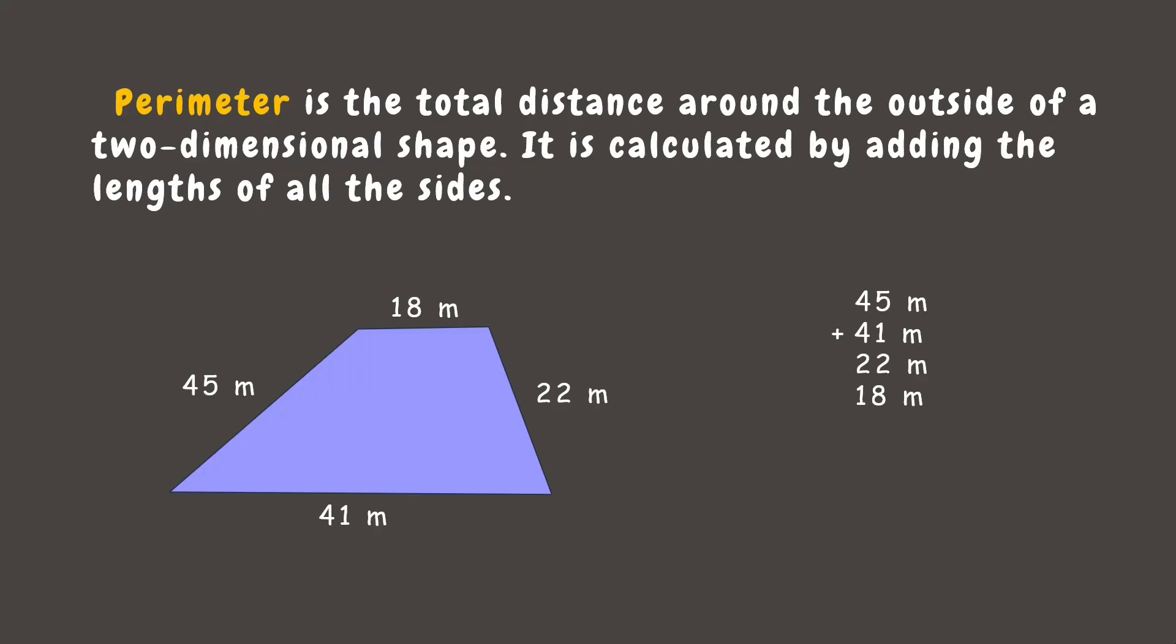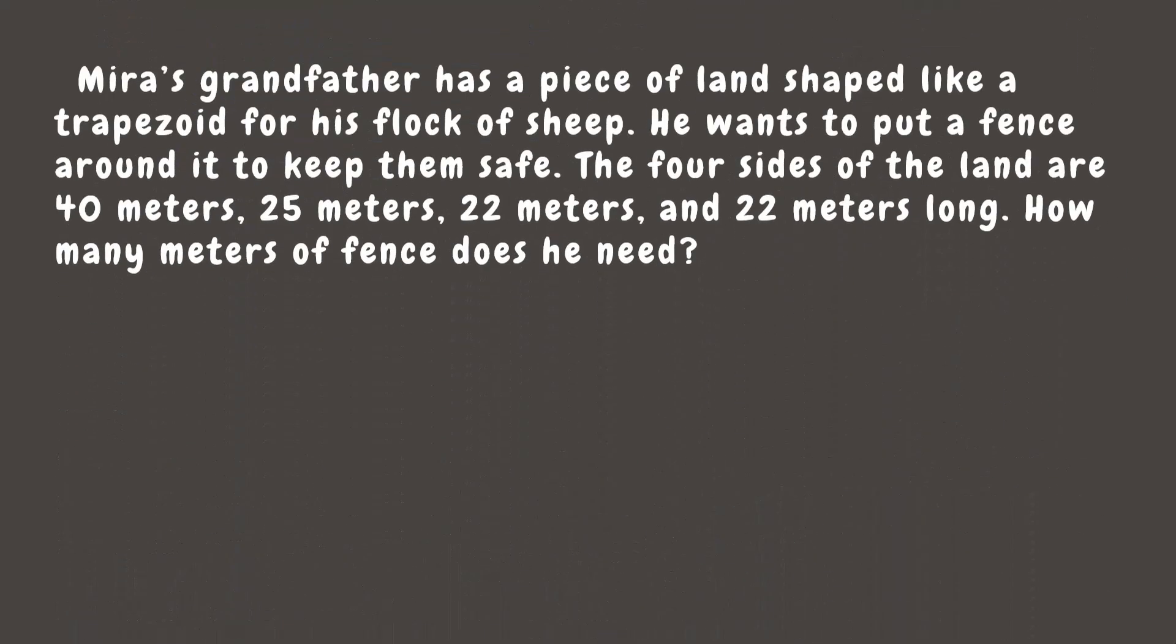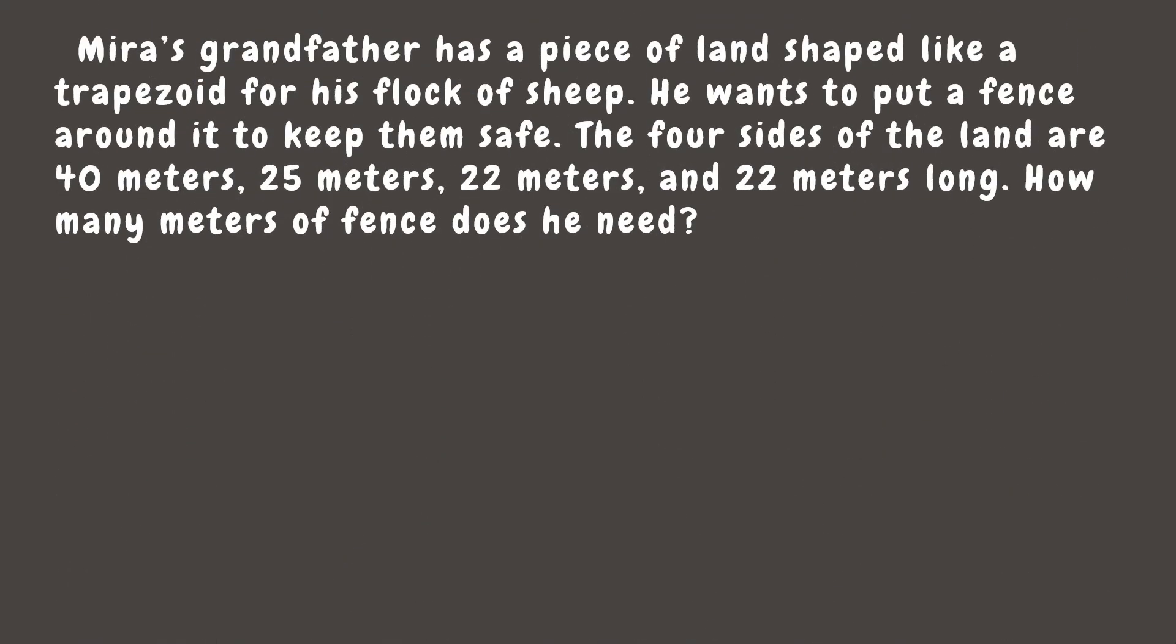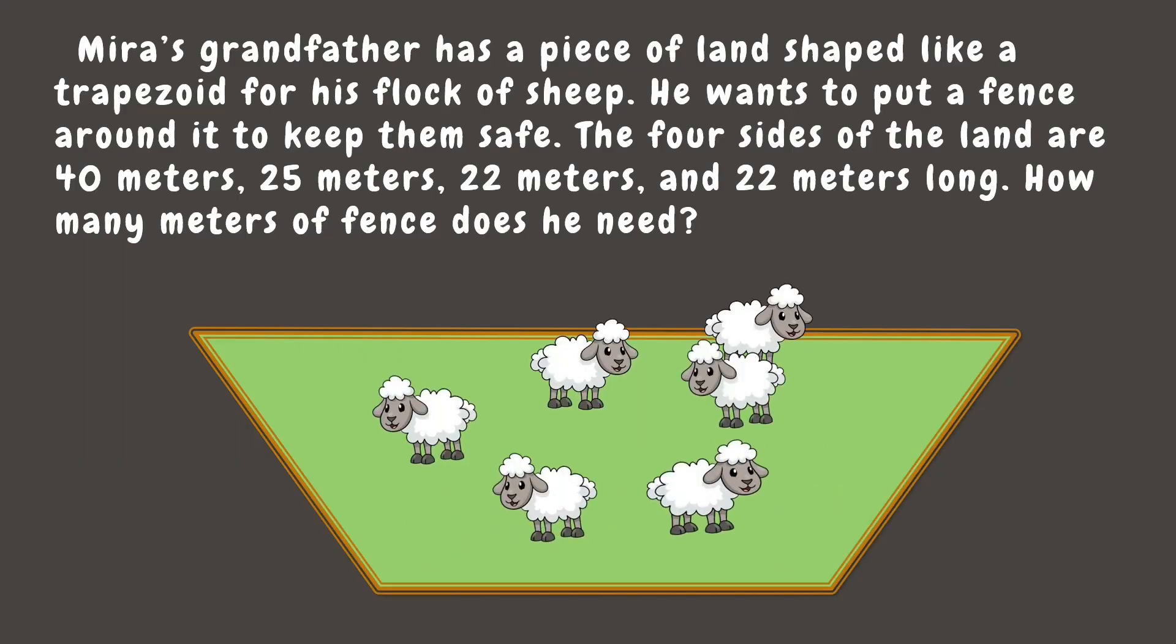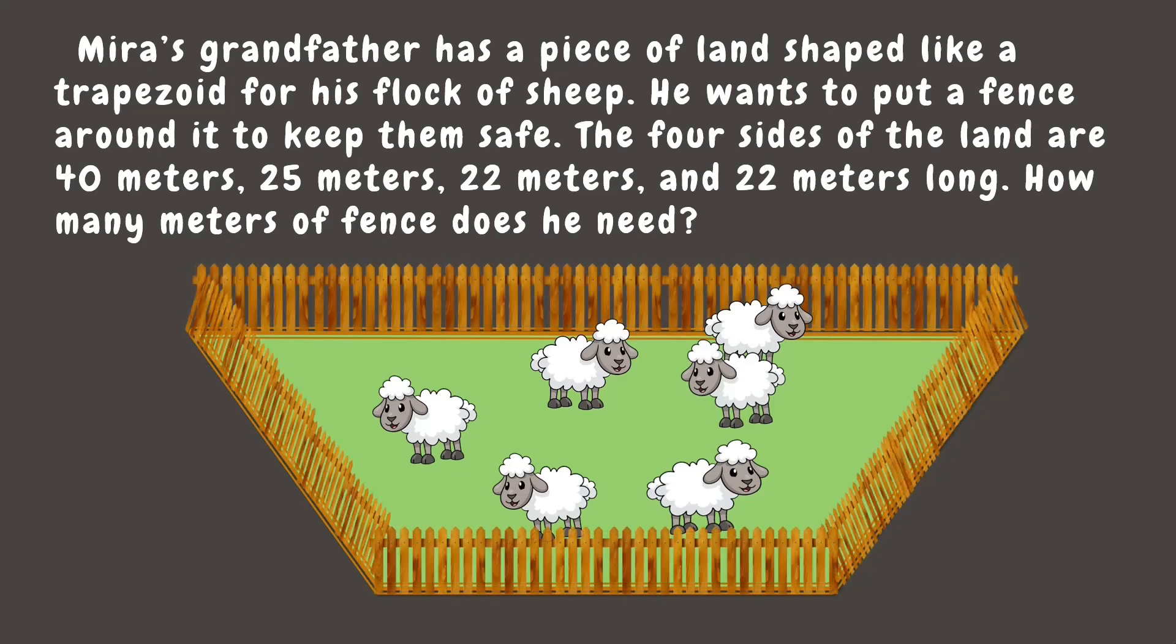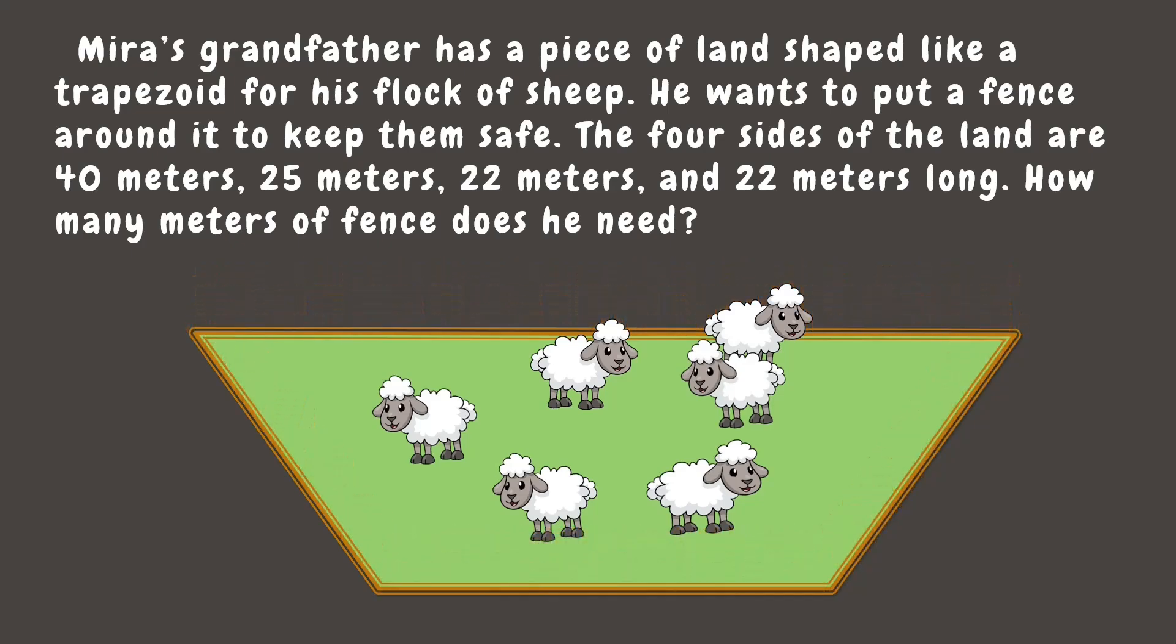Wonderful! Now let's help Mira's grandfather. He has a piece of land shaped like a trapezoid for his flock of sheep. He wants to put a fence around it to keep them safe. The four sides of the land are 40 meters, 25, 22, and another 22 meters. Now, how do we get the total meters of the fence needed?